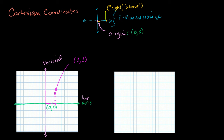Now what if I had a point over here? This seems a little bit trickier. How far to the right of the origin is this? Well, we aren't to the right — we're to the left of the origin. The convention is we say it's a negative number to the right of the origin. We're 1, 2, 3, 4, 5, 6 to the left, so this is minus 6. And then we're going down 1, 2, 3. The convention for down is we use a negative number, so we're minus 3. So the coordinate is minus 6, minus 3.